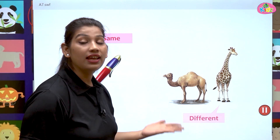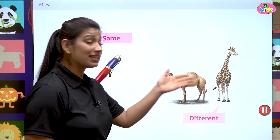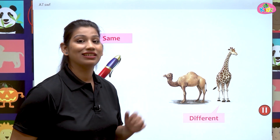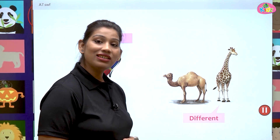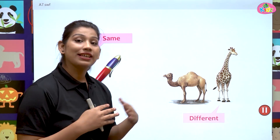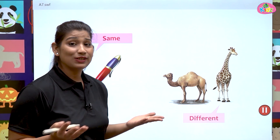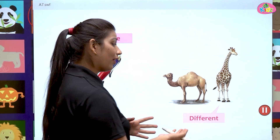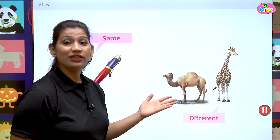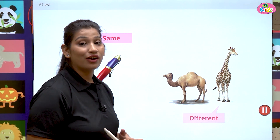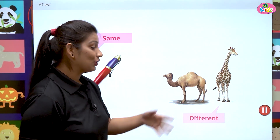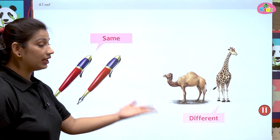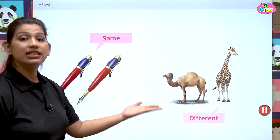But here you can see animals — these animals are different from one another. They are different because the camel does not have a long neck like the giraffe. The colors of both animals are also different. So these animals are different.